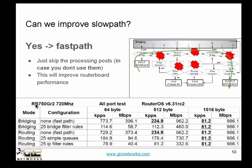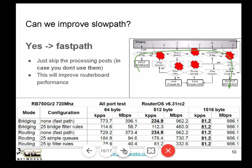As you can see here, testing on RB750G in bridging or routing mode with no special configuration — meaning FastPath is active — it can forward 373 megabits per second. With 25 simple queues, it drops to 94.6 megabits per second. With IP filter rules, it becomes lower and lower. So FastPath is really, really helpful here.